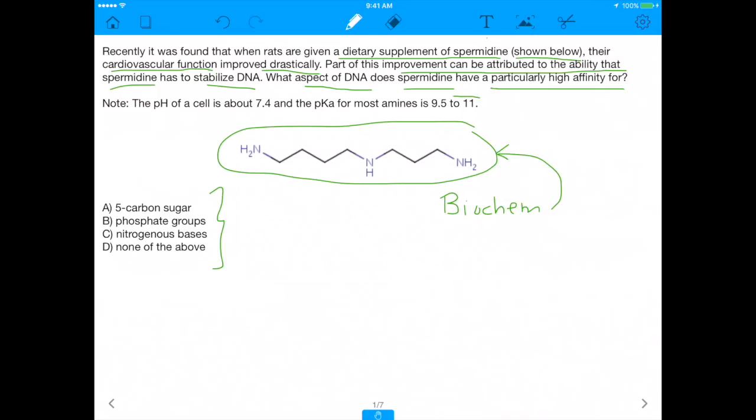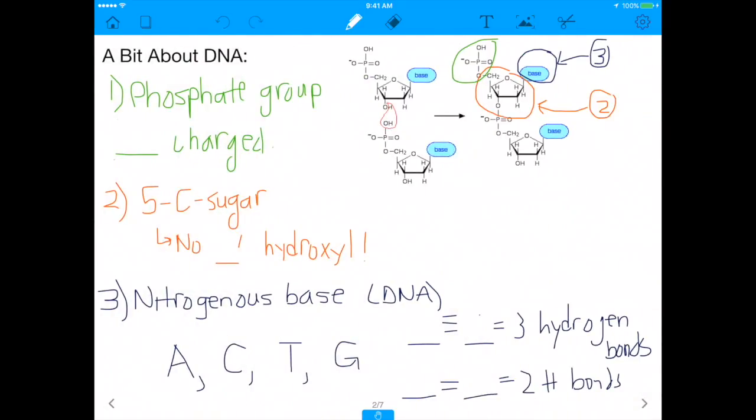But the other thing you want to note is this note. So there's a very important note here that's at the bottom. It says the pH of the cell is 7.4, and that the pKa for most amines is 9.5 to 11. That's very important because that's going to be something we're going to need to remember moving forward because pKa and pH come together to tell us whether or not certain things will be protonated or not.